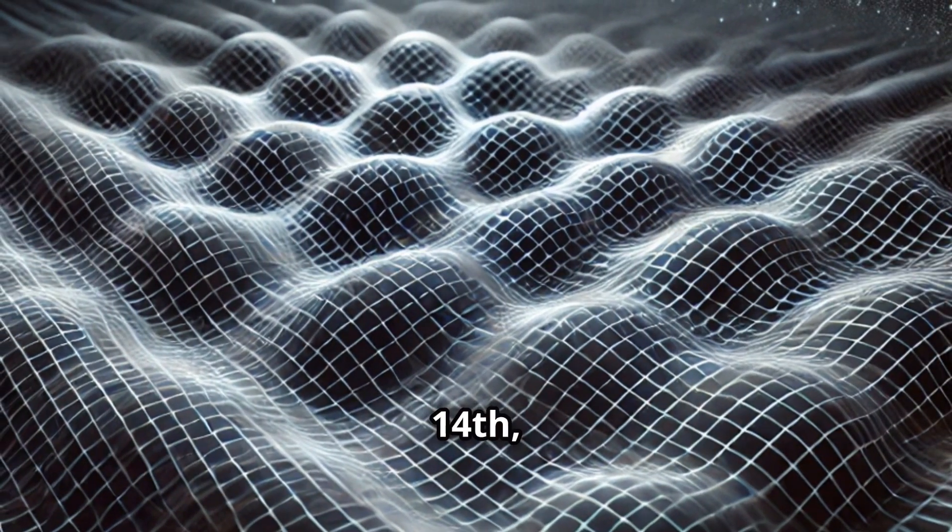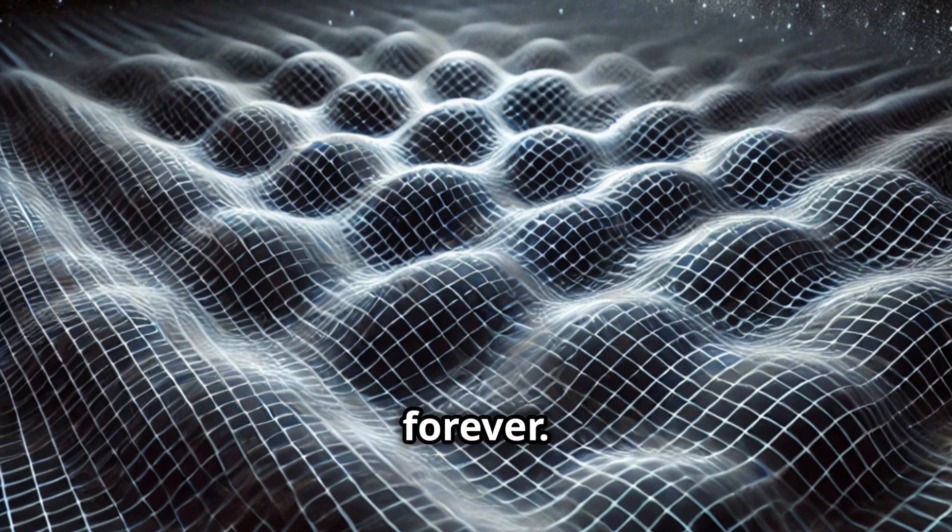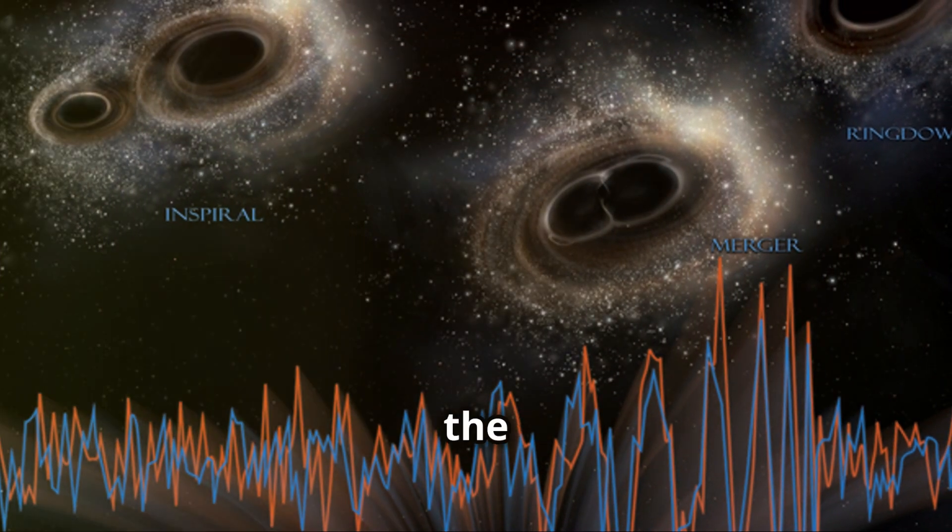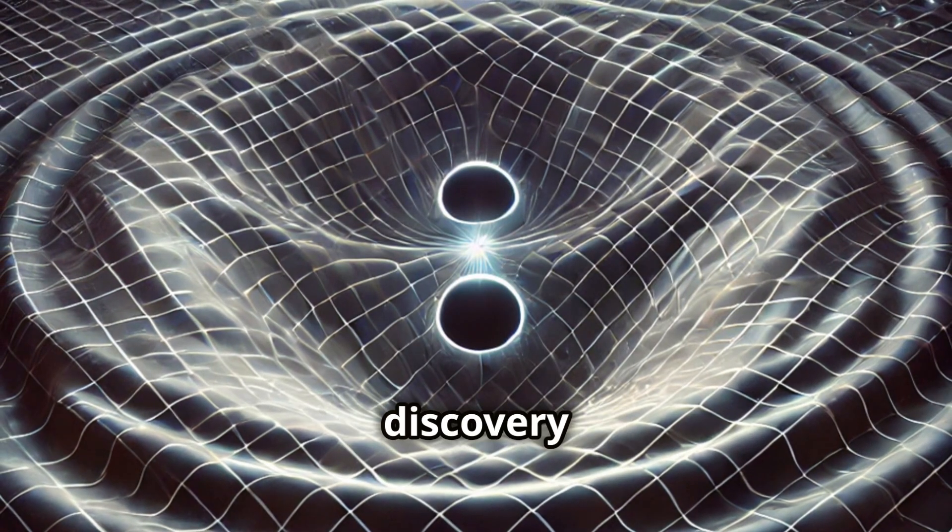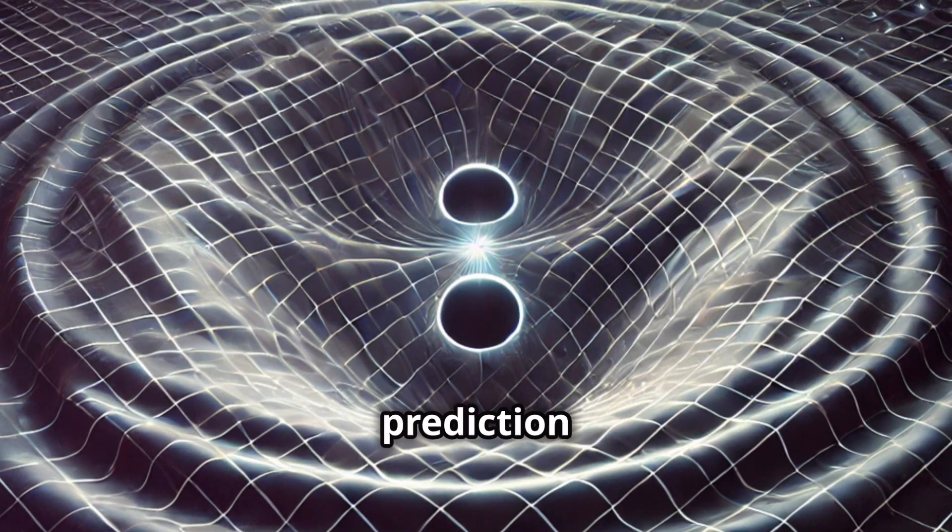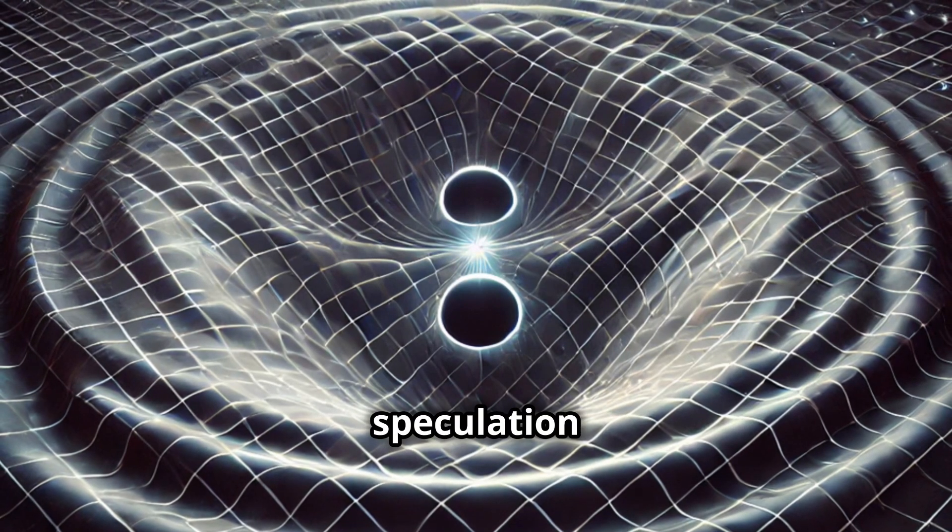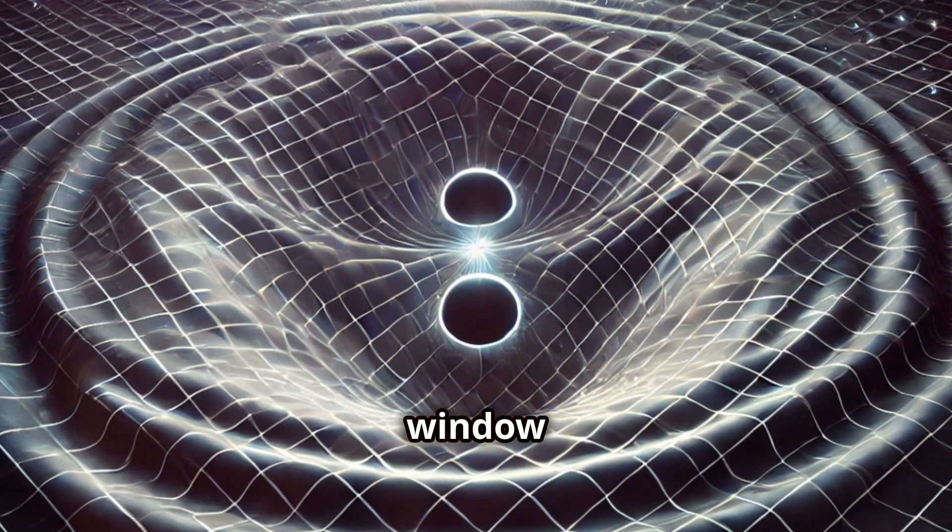On September 14, 2015, the world of astronomy changed forever. The LIGO detectors made the first ever direct detection of gravitational waves. This groundbreaking discovery confirmed Einstein's prediction after a century of speculation and opened up a new window to the universe.